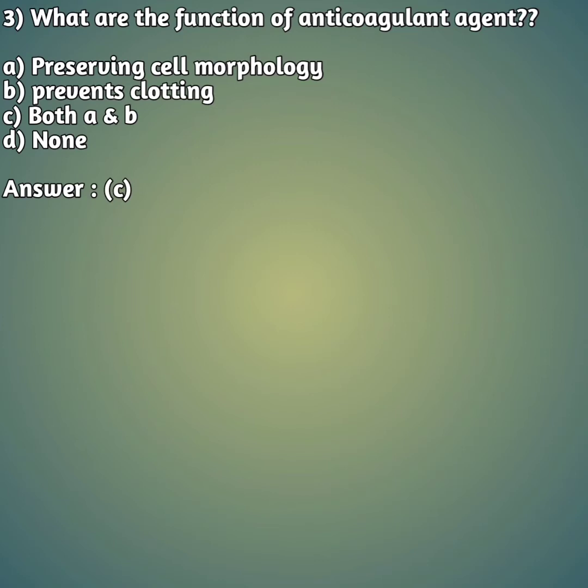Third question: what are the functions of an anticoagulant agent? Option A: preserving cell morphology. Option B: prevents clotting. Option C: both A and B. Option D: none. The right answer is option C — both A and B — preserving cell morphology and preventing clotting.